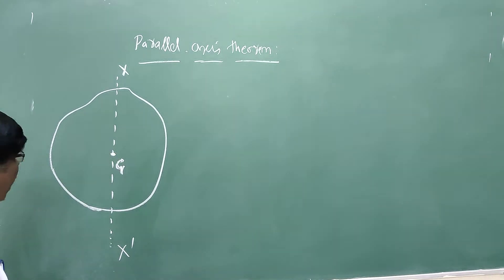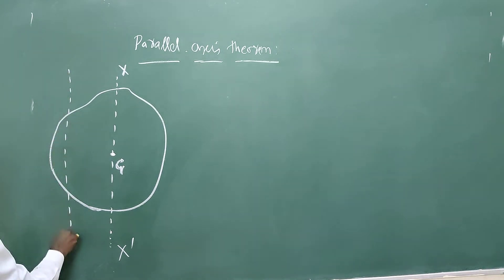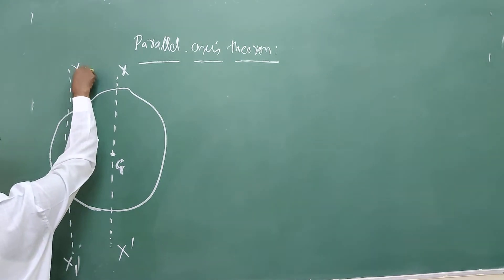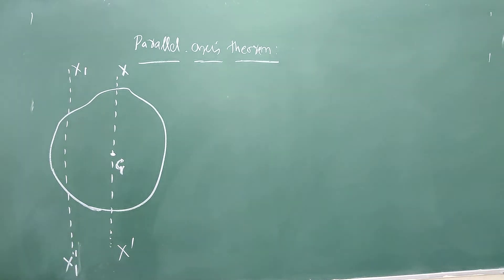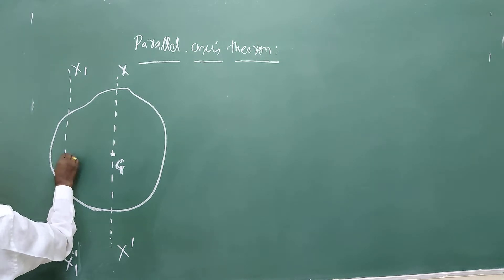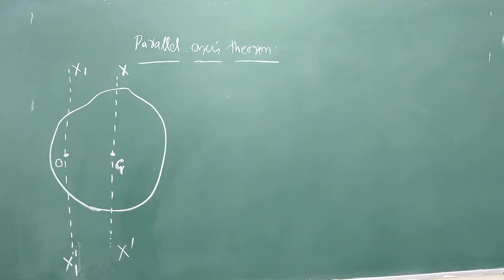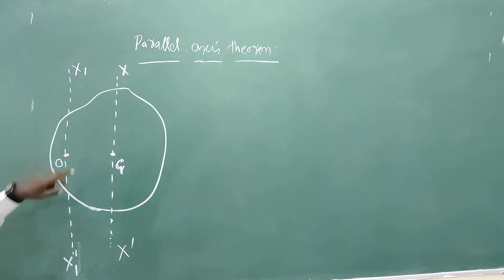Let us consider another axis: X1 and X1-dash. This point is called O. These two axes are parallel to each other. X-X-dash is the axis at the centre of gravity, and X1-X1-dash is the axis of rotation at O.